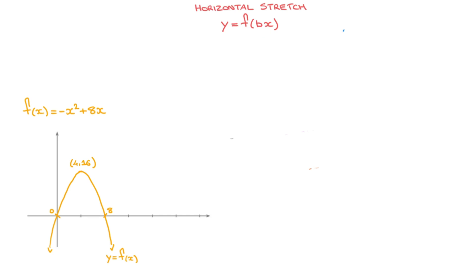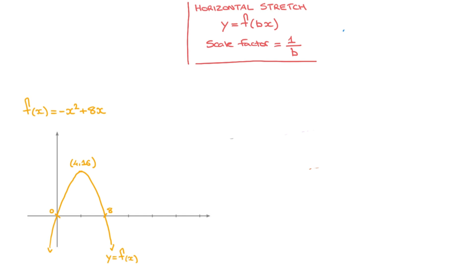In a similar way to the vertical stretch, which was characterized by a scale factor we had to multiply all the y-coordinates by, the horizontal stretch is characterized by a scale factor we'll need to multiply all the x-coordinates by. And that scale factor is equal to the reciprocal of b, so that's 1 over b.